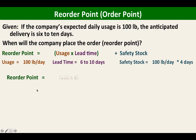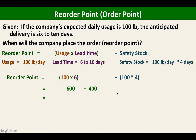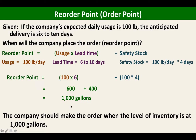The reorder point is computed as 100 times 6 (the minimum lead time), plus 100 times 4 days (covering days 7, 8, 9, and 10) in case there is a delay in delivery. That gives us 600 plus 400 for the safety stock, so our reorder point is 1,000 gallons.